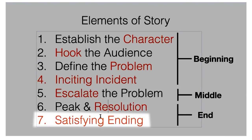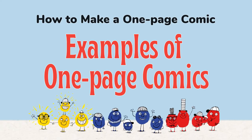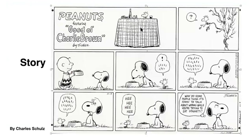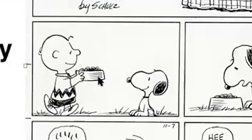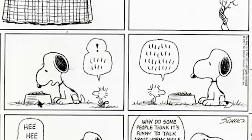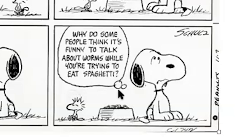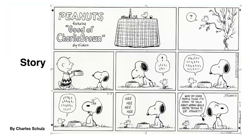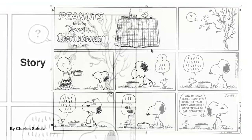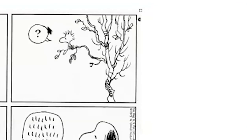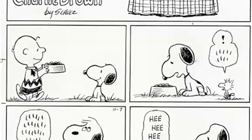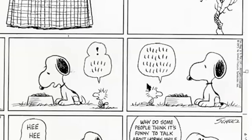Let's look at Peanuts. This strip features Woodstock and Charlie Brown. You can see the little bird wondering what's going on. Charlie Brown brings a bowl of food for Snoopy, and Woodstock reacts. Snoopy thinks to himself. In the first three frames we establish the characters. Here's the problem — Woodstock is watching, and then we see Charlie Brown bringing the bowl of food to Snoopy.